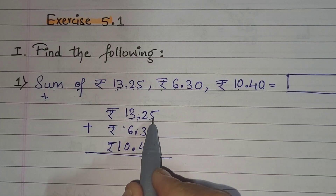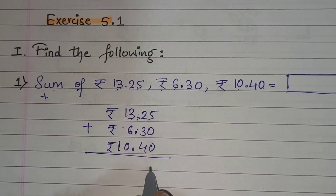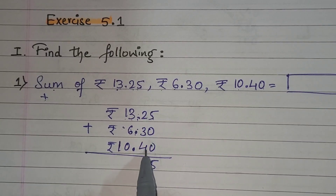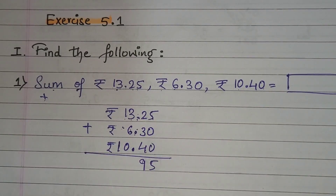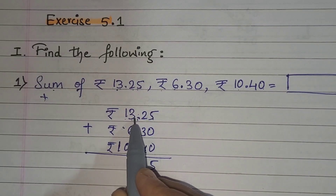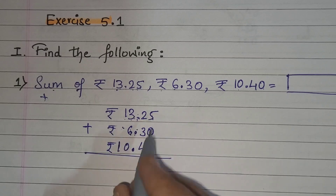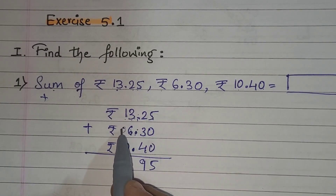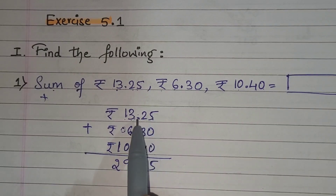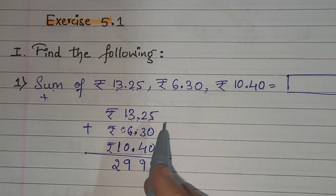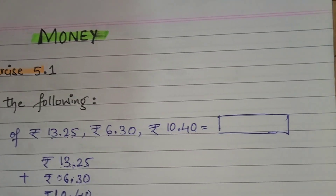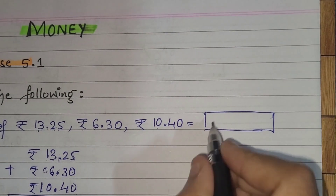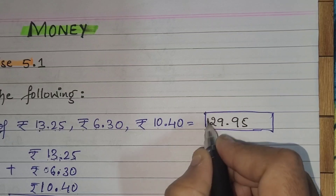Starting from the right: 5 plus 0 is 5. 2 plus 3 is 5. 5 plus 4 is 9. Next, 3 plus 6 is 9. 1 plus nothing is 1, plus 1 is 2. Now place the decimal point after 2 digits. So your answer is rupees 29 and 95 paise.